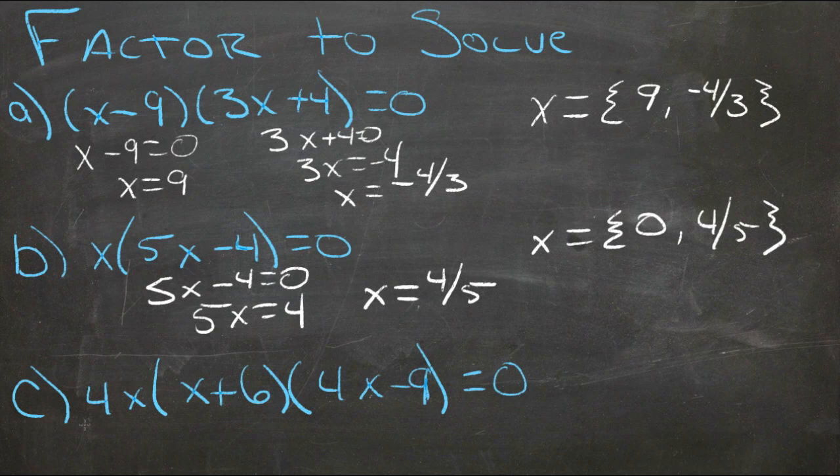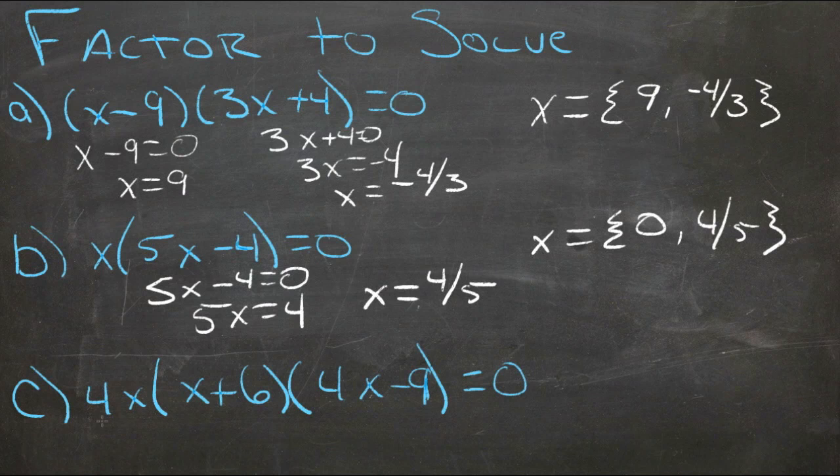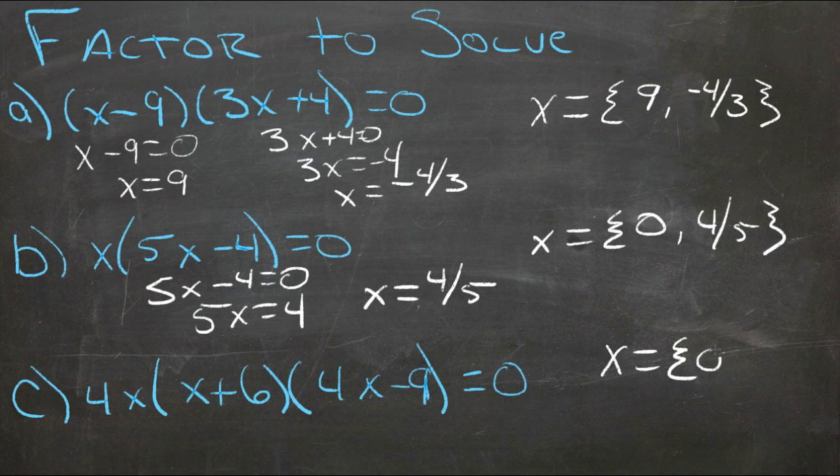Then in our last example, we actually have three solutions. x could be zero, because 4 times zero would be zero, and then it wouldn't matter what these were. So one solution is zero.